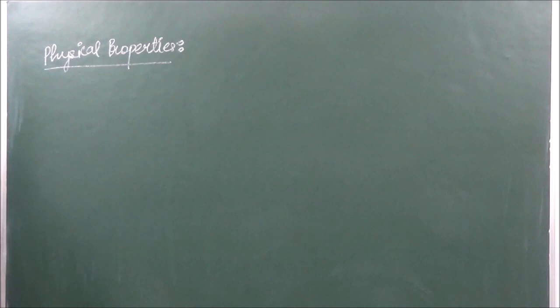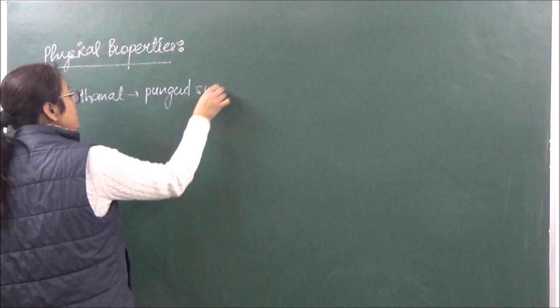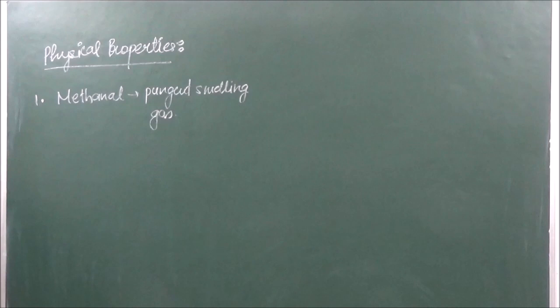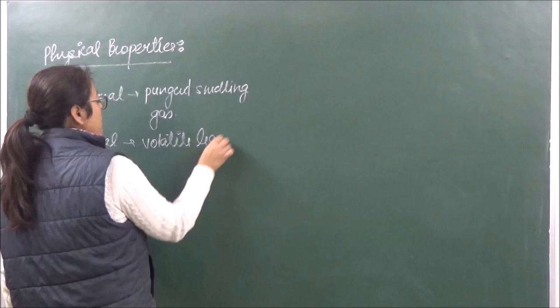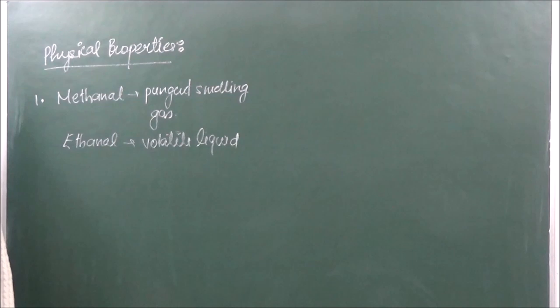When talking of physical properties, the smaller members exist as gases. For example, methanal exists as a pungent-smelling gas, ethanal exists as a volatile liquid, and members up to 11 carbon atoms are colourless liquids. The higher members are going to be solids.